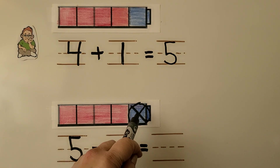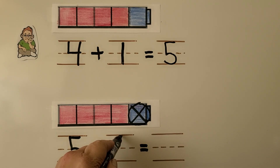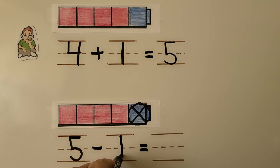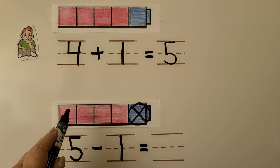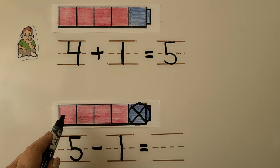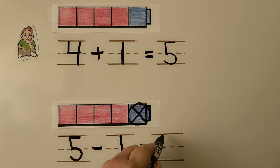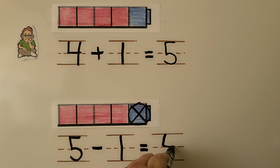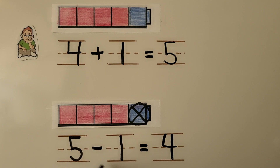And we're taking away one — we write the one here. This is the place for the number we write that's the amount going away. Then we can count how many are not crossed out: one, two, three, four. We can write the four for how many are left. Five minus one is equal to four. After Bill gave one away, he now has four cubes.